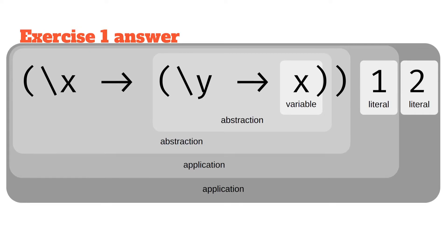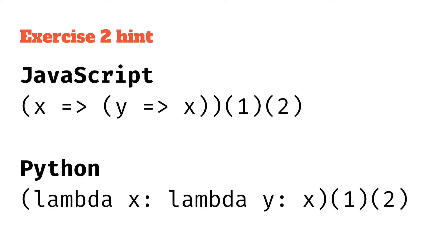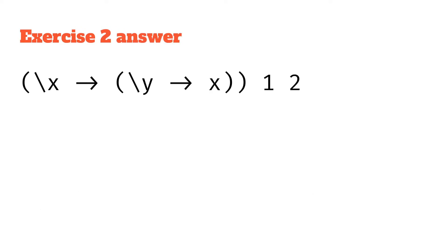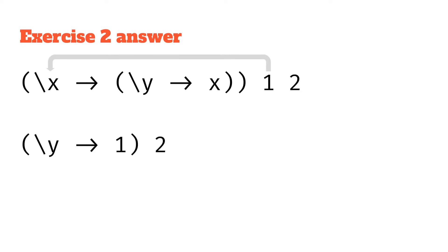Let's compare it to JavaScript or Python — this is effectively the same expression in those languages. We do a beta reduction: we take the 1 and pass it in as x, then look at the right hand side of the arrow after that x — we've got backslash y arrow x — but we're replacing all the x's with 1, so we get backslash y arrow 1. We've still got that 2, so we apply it: we put 2 in for y, look at the right hand side which is just 1, there's no y to replace, so the result is 1.